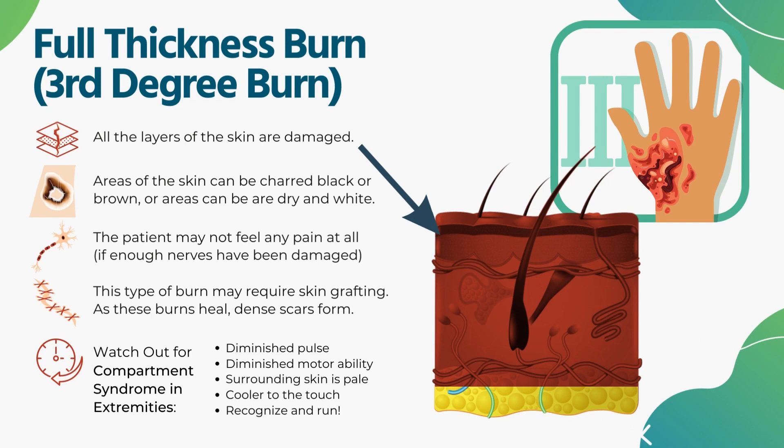When fluid cannot escape due to inflexible burned skin around an extremity, it forms what we call compartment syndrome. You can identify this by comparing the affected extremity to the good side: the pulse will diminish on the affected side, feeling and motor movement will diminish, skin color will become more pale, and temperature will be much cooler. When you see this, protect the burn area and recognize what's happening — get that patient to definitive care.